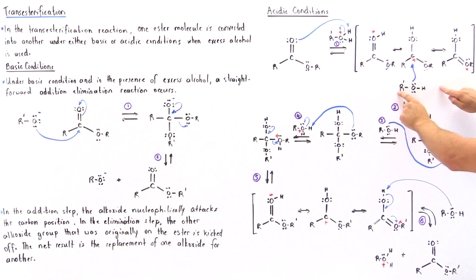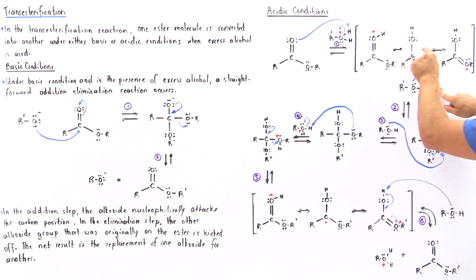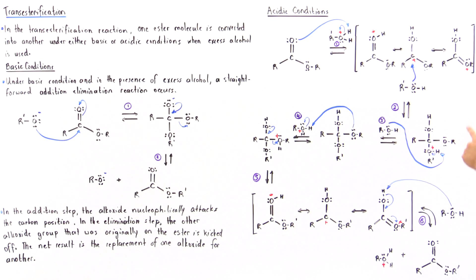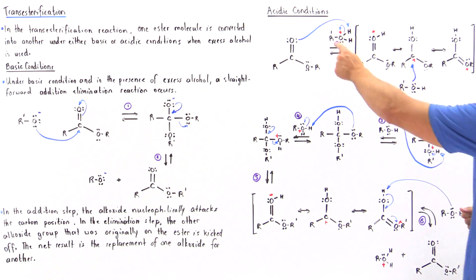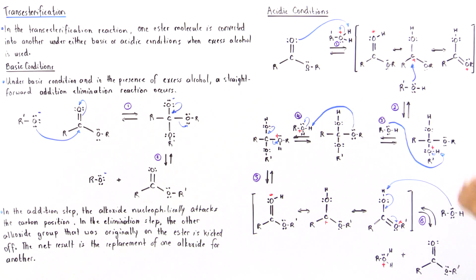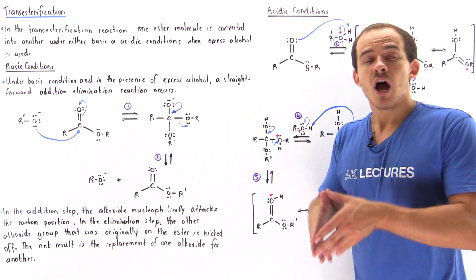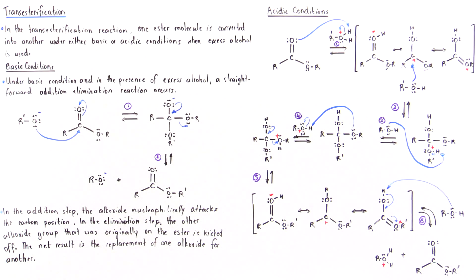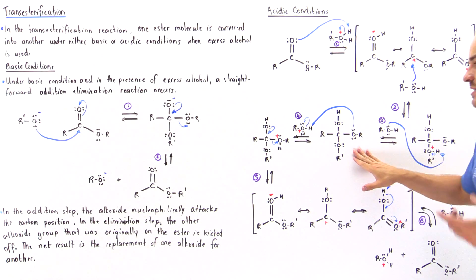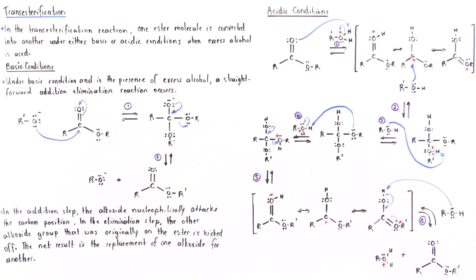In step number two, the alcohol attacks this carbon of this strong Lewis acid, and we form this tetrahedral intermediate that contains a positive charge on this oxygen. Notice once again we're designating this R group with R prime, and these R groups with simply R. In step number three, we basically have to deprotonate this oxygen to remove the positive charge on it, because whenever we have a positive charge on an oxygen, that is a very destabilizing effect since oxygen is electronegative. So in step three, an alcohol molecule deprotonates this oxygen, forming this intermediate in which we no longer have a charge on that oxygen.